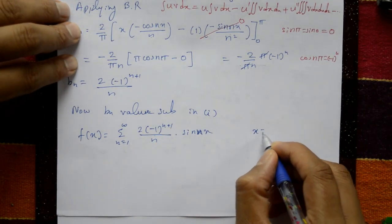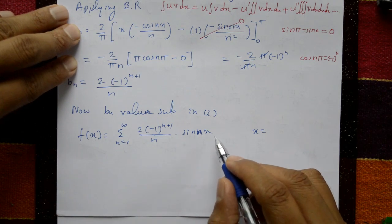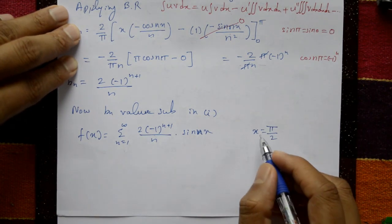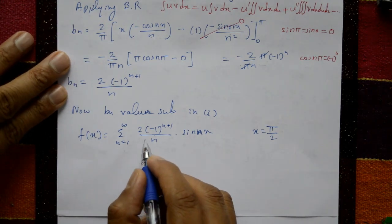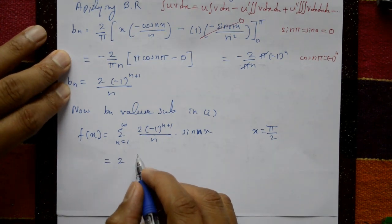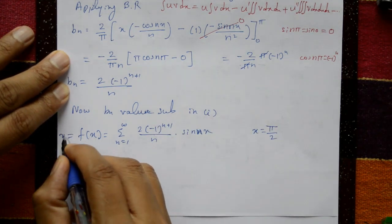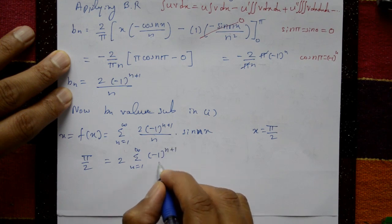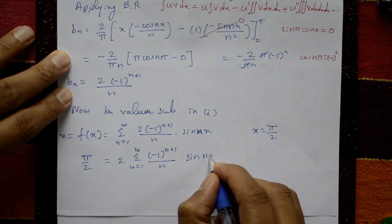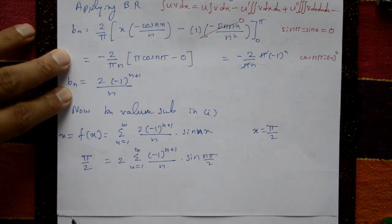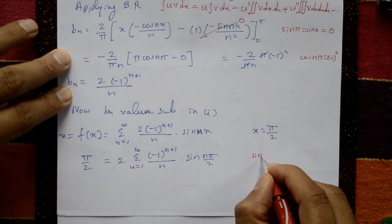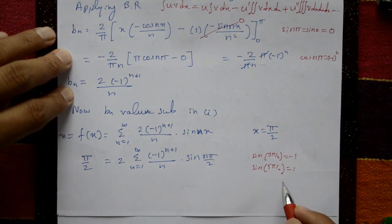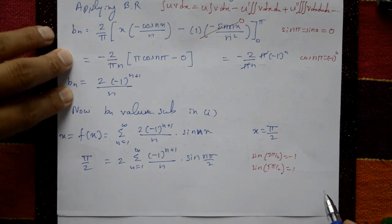Now, put x equal to a suitable value. Avoid x = π, 2π, or 0, since sin is 0 at those points. Better to take x = π/2, where sin(nπ/2) = 1 for n=1. Putting x = π/2: f(π/2) = φ(π/2) = π/2. Evaluating: sin(π/2)=1, sin(π)=0, sin(3π/2)= minus 1, sin(5π/2)=1, sin(7π/2)= minus 1, sin(9π/2)=1. Only odd n terms contribute, alternating plus and minus.